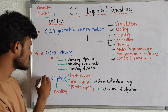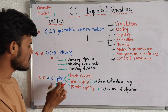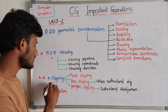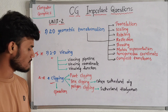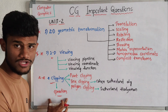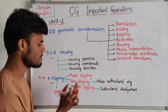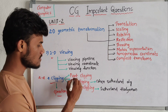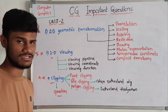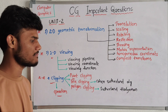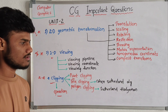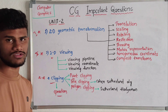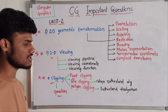Next we have clipping. Clipping is very very important. The important topics are operations of clipping, point clipping, line clipping, and polygon clipping. These are the three very important types of clipping. Point clipping is a basic explanation. For line clipping, we use the Cohen-Sutherland algorithm.